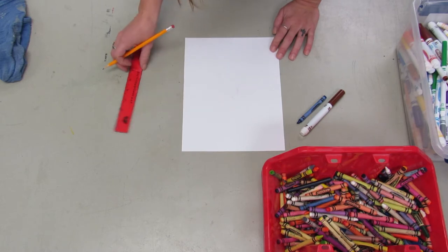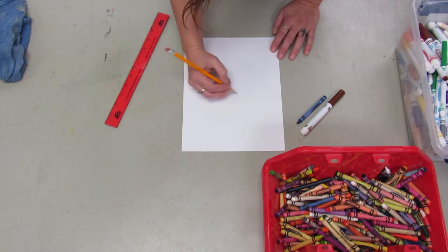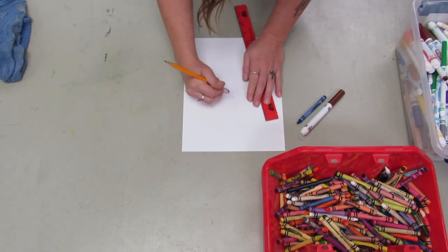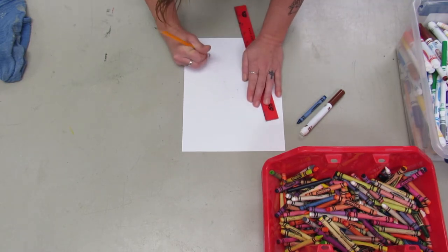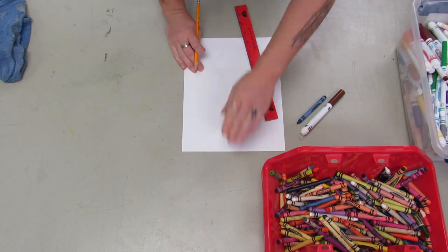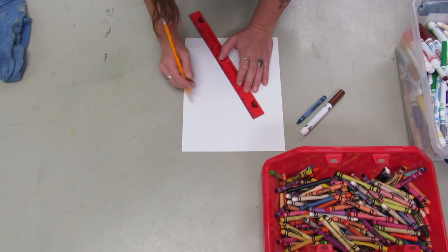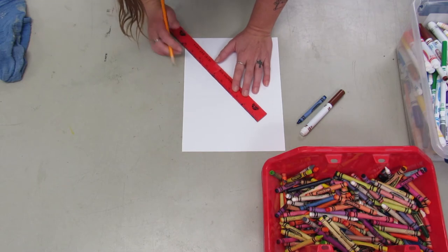It's kind of hard to see with the pencil, but the ruler is lined up with the little dot that I made on the horizon line, and then it's going to go outwards and get bigger or wider as it comes towards me.